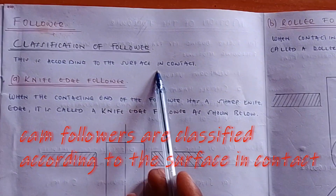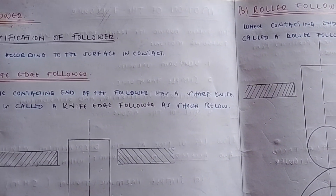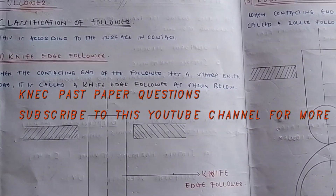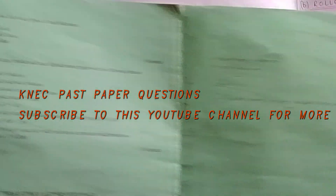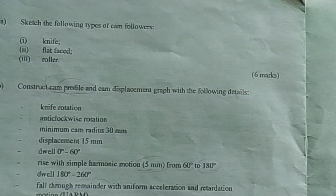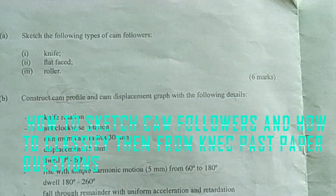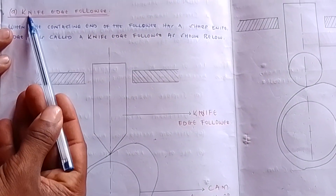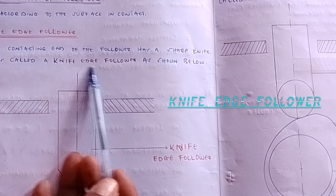We classify followers according to the surface in contact. The very first classification is the knife-edge follower. I showed you this in the previous past paper question — a student was asked in 2020 to sketch the following types of cam followers: sketch knife-edge, sketch flat-faced, and sketch a roller, which is worth six marks. When the contacting end of the follower has a sharp knife-edge, it is called a knife-edge follower.